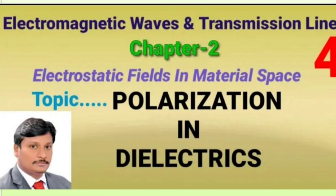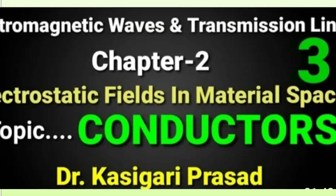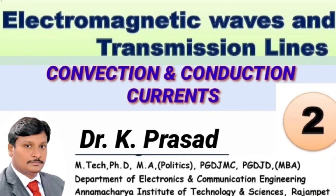In our previous discussions, we defined new parameters like polarization in dielectrics, the main difference between conductors and dielectrics, and the different types of currents that flow, like convection current and conduction current. We also defined dielectric constant and dielectric strength.